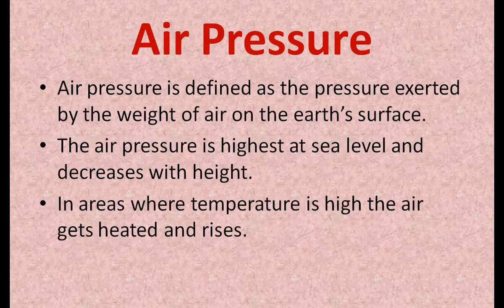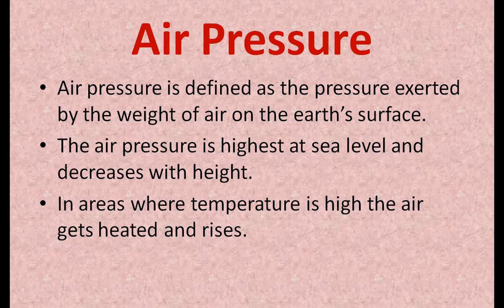Our next topic is air pressure. Air pressure is defined as the pressure exerted by the weight of air on the earth's surface. Air pressure is highest at sea level and decreases with height. Atmospheric pressure at a place is affected by two major factors: temperature and altitude. Regarding temperature: when air is heated, it expands, becomes light, and rises vertically. Rising warm air exerts very little pressure on the surface, causing a low pressure area. When air is cooled, it becomes heavy, sinks, and exerts greater pressure, creating a high pressure area.